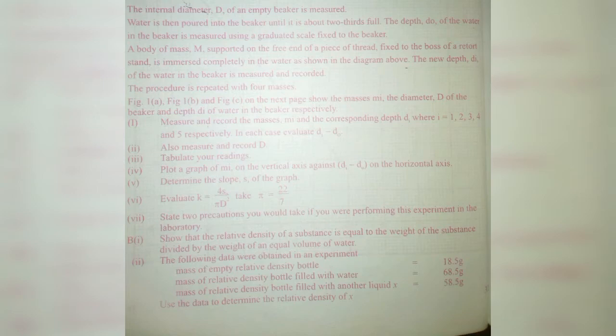When every mass is immersed in water, there should be a rise in the water level measured with the scale already immersed in the water. Measure d₀, the original depth of water, and record it. Then measure and record the mass mᵢ and corresponding depth dᵢ where i equals 1, 2, 3, 4, 5 respectively. In each case, calculate dᵢ minus d₀.